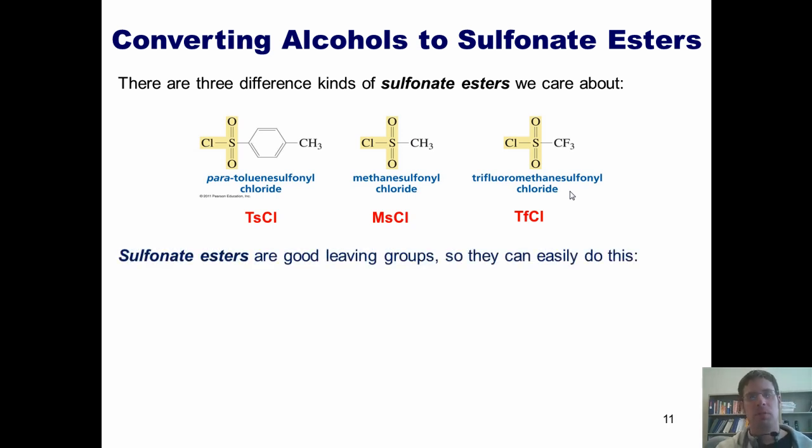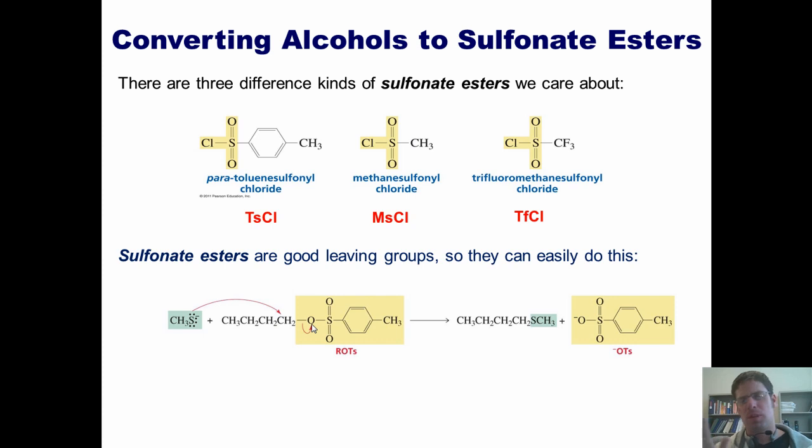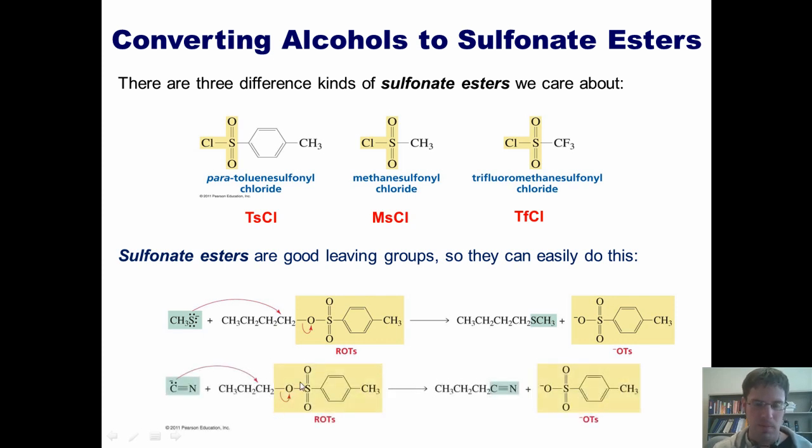Sulfonate esters, as I mentioned before, are good leaving groups, so they can easily do this. If I've got an oxygen that presumably was formerly an OH and has been converted into a sulfonate ester, it can easily be kicked off by a nucleophile that normally couldn't kick off an OH. This is one example of an S- coming in and kicking off this sulfonate group to form this product right here. Here's another example. I've got my sulfonate ester right here, in this case a tosylate group, and I've got a cyanide nucleophile coming in here to kick off this oxygen. I guarantee that if I tried to do either of these two reactions with just a regular OH as opposed to an OTS, it would be much more difficult and maybe wouldn't even go at all.